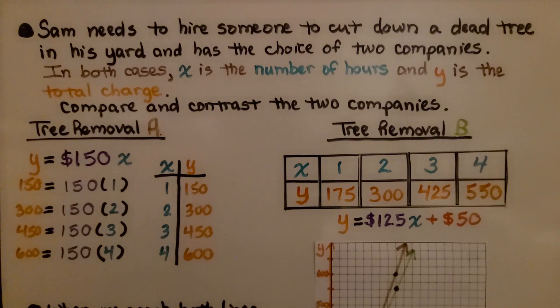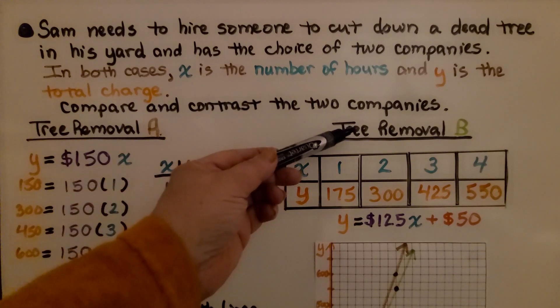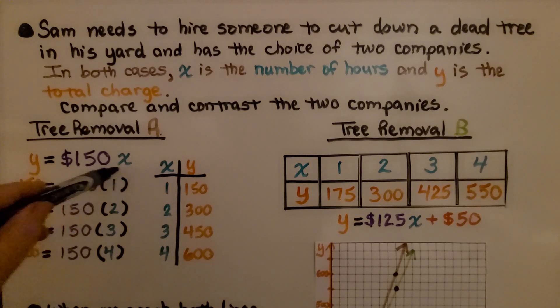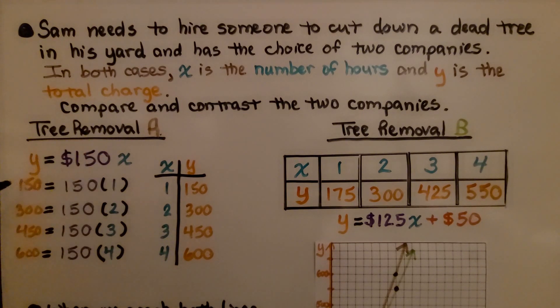Sam needs to hire someone to cut down a dead tree in his yard and has the choice of two companies. In both cases, x is the number of hours and y is the total charge. Compare and contrast the two companies. So we have tree removal A and tree removal B. A is given as this equation, and B is given as this table of values. If we substitute 1 for x, then y = 150. And if we substitute 2, it's 300. If we substitute 3, it's 450. If we substitute 4, it's 600. So we have our table of values here for this equation.